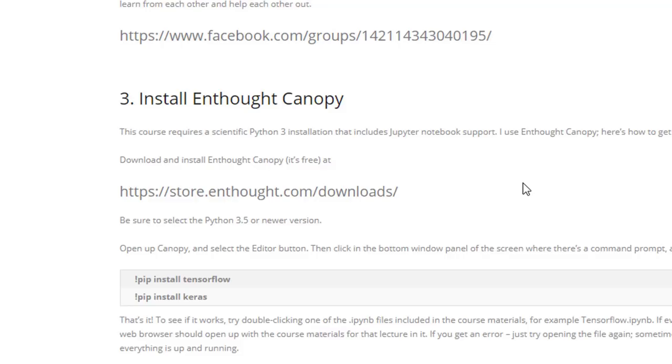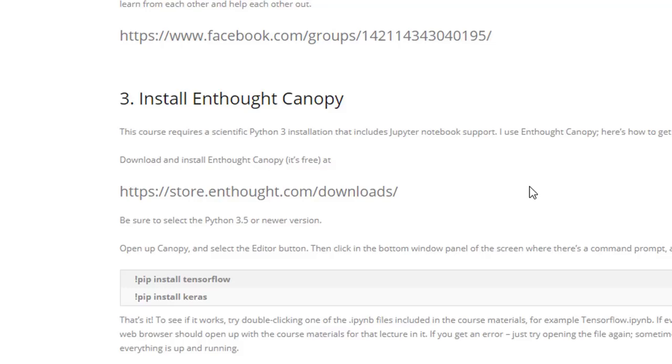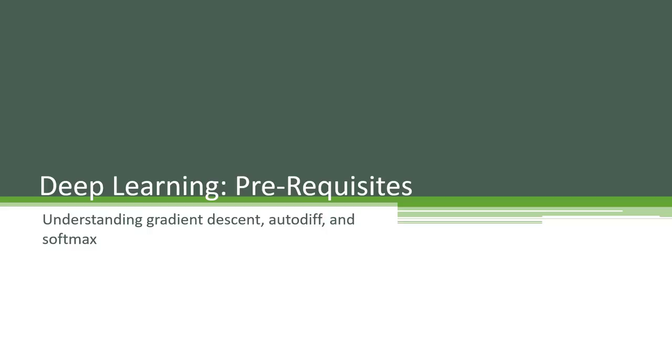Let's talk about some of the mathematical prerequisites that you need to understand deep learning. It's probably going to be the most challenging part of the course actually, just some of the mathematical jargon that we need to familiarize ourselves with. But once we have these basic concepts down, we can talk about them a little bit more easily. First thing we want to talk about is gradient descent.